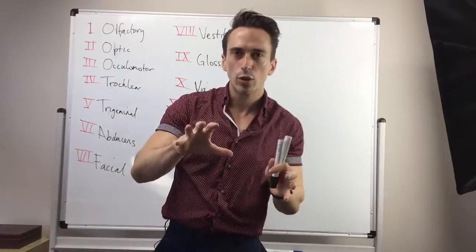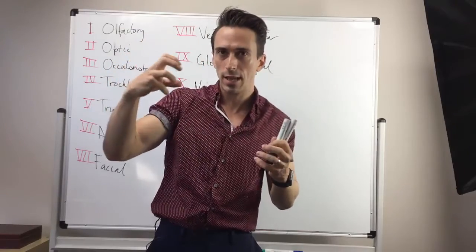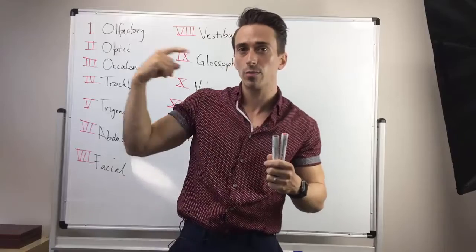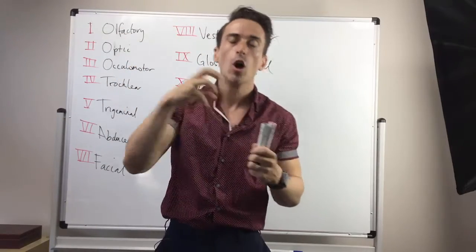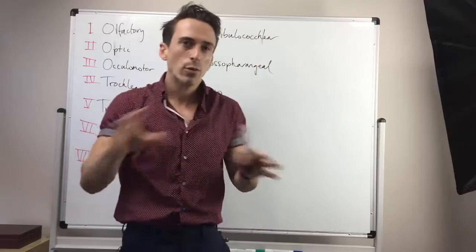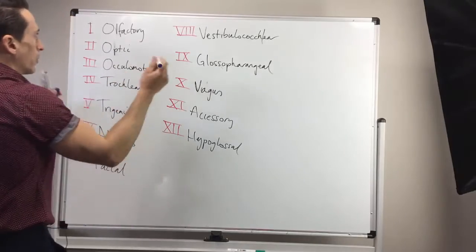So remember this, a sensory nerve will pick up information from the tissue and send it to the brain or brain stem. Motor nerve will take information from the brain or brain stem and send it to the tissue. And usually it's to a muscle or to a gland. So how do we determine whether these are sensory or motor or both? Okay, here's another one. You ready?